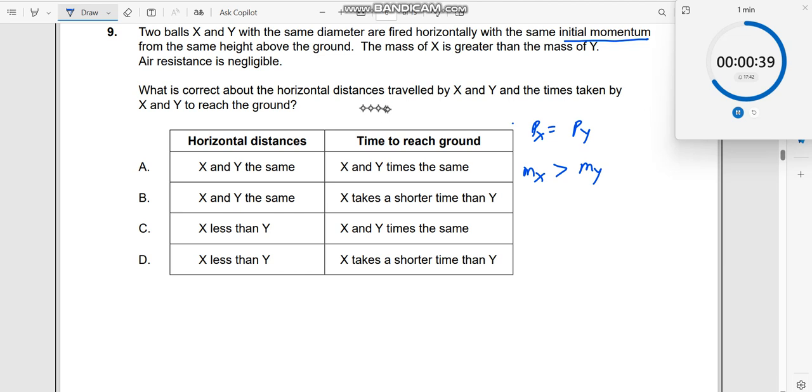What is correct about the horizontal distance traveled by X and Y and the times taken by X and Y to reach the ground? So, what we do is, first let us write down this condition.